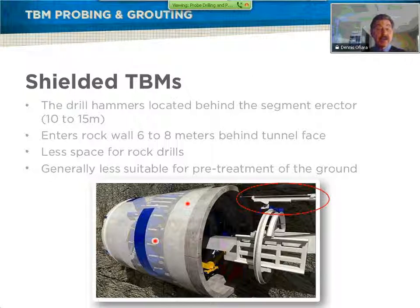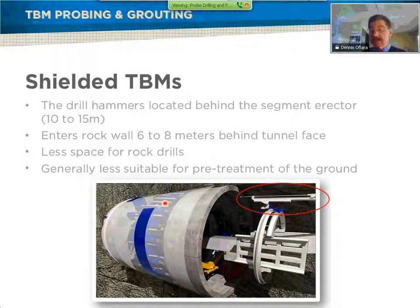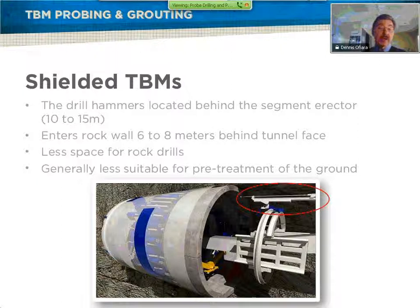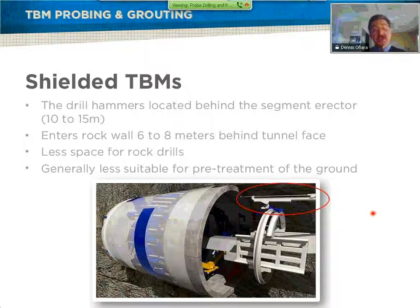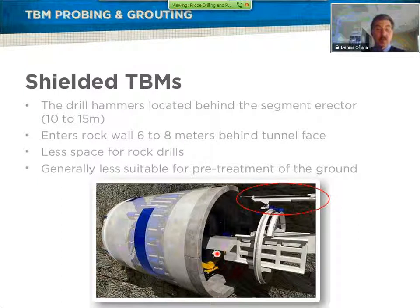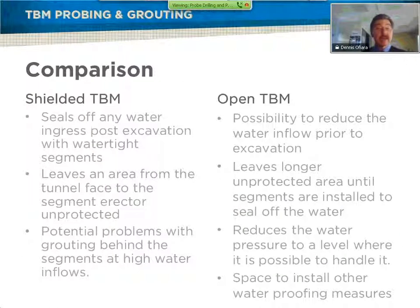On shielded machines, the shield body is usually full of equipment. It's difficult to get drills mounted within the shield body — sometimes possible, but sometimes you have to compromise on bearing size or other specifications. Normally on a shielded machine, drills are mounted farther rearward and collar in through the gripper area in the case of a double shield machine. If you don't anticipate a lot of drilling, often the segment erector in the tail shield can grip the drill and act as a drill positioner; otherwise, a dedicated drill positioner is moved forward for drilling.